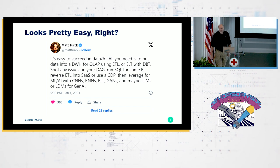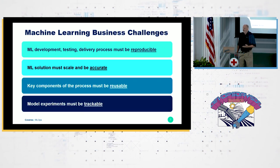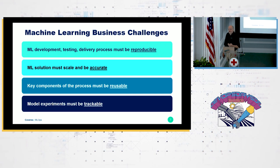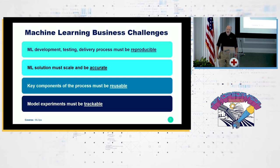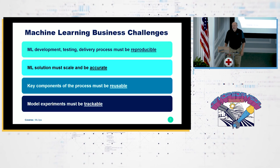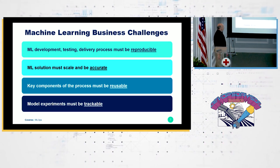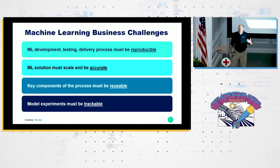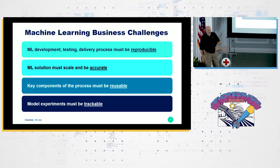This is not as simple as it looks. There are four challenges I think are the most important things to solve as part of the machine learning process — challenges that MLOps, the concept I'm going to introduce, helps you with. The first is that the entire process we follow to design, develop, test, and deliver machine learning models into production has to be reproducible.